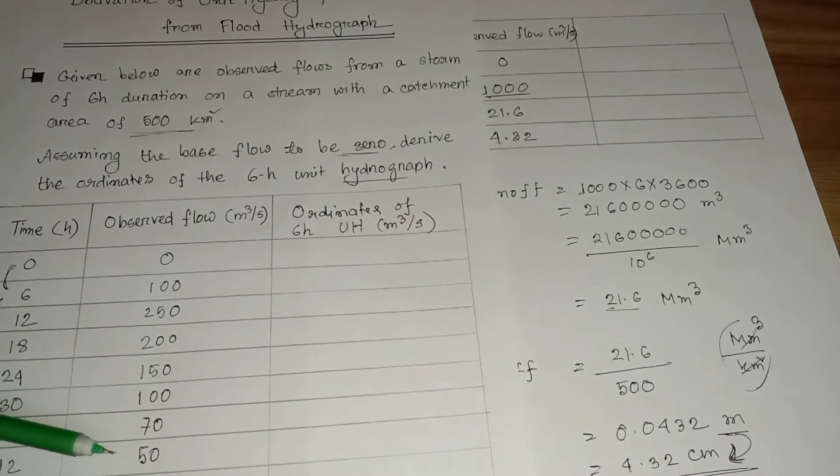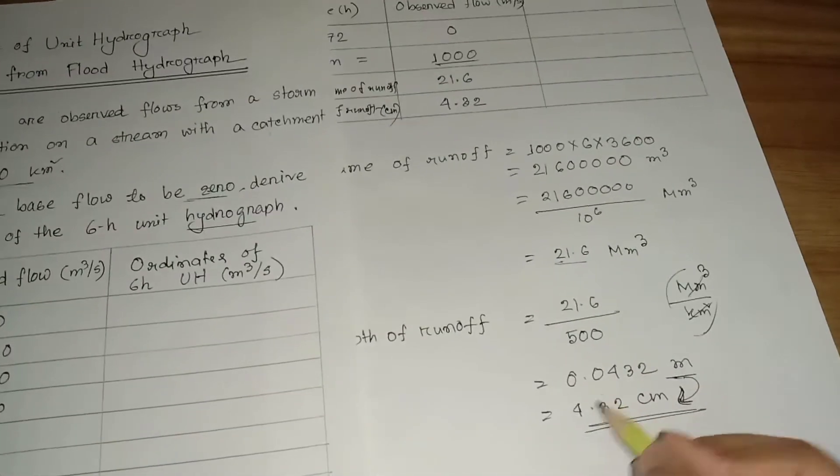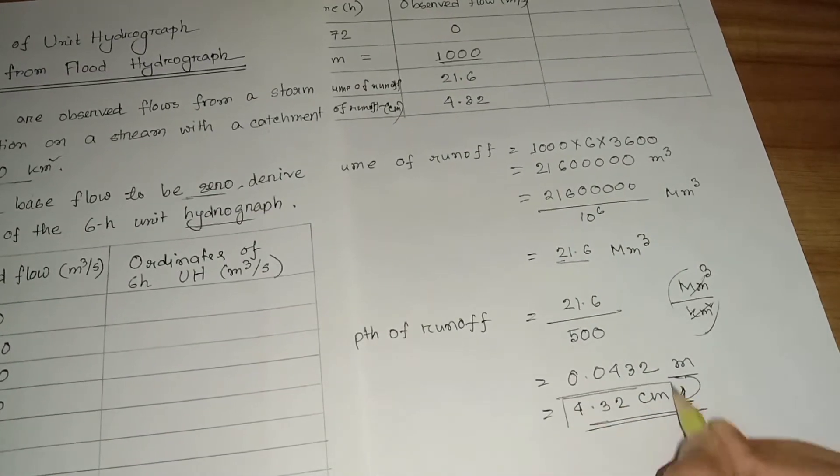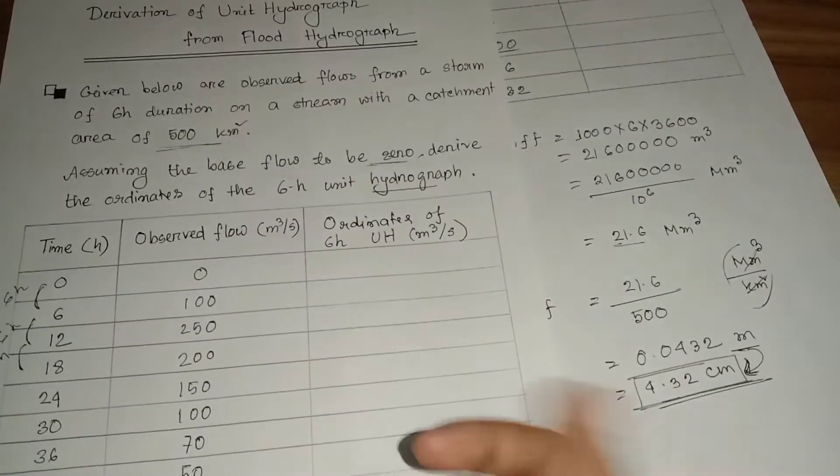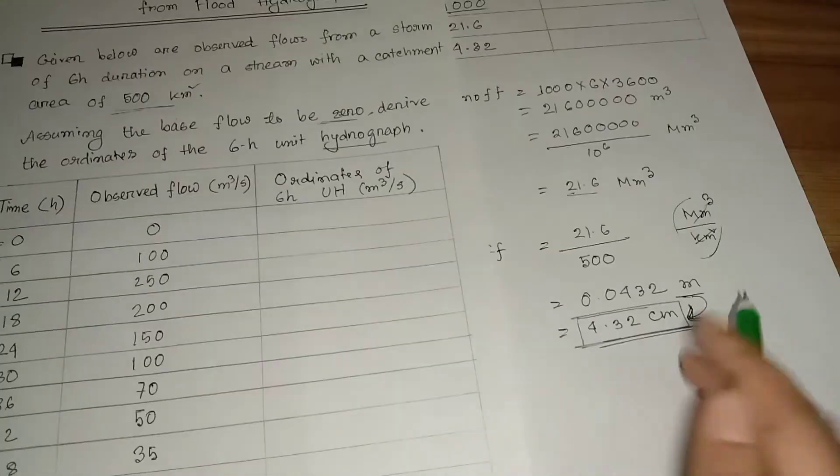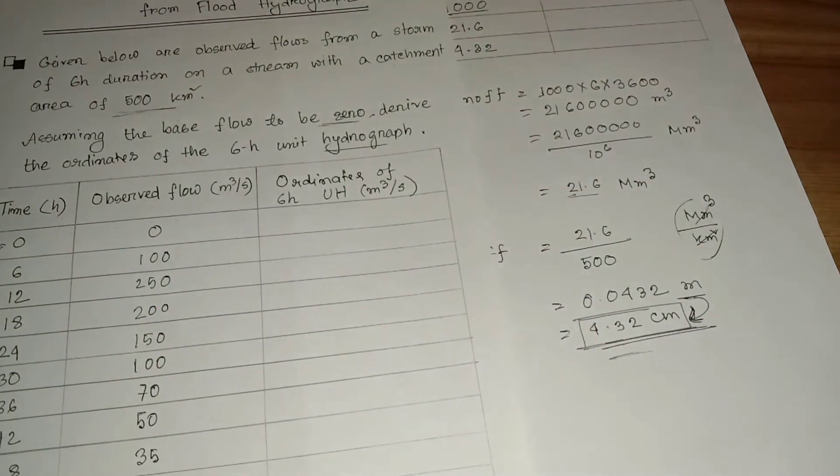So if you take one centimeter rainfall, this will give unit hydrograph. Since we have 4.32 centimeter, we will divide all the observed flows with this required value, and thus we will find out the ordinate of six hour unit hydrograph.